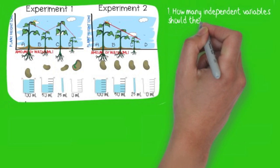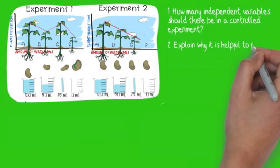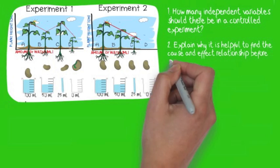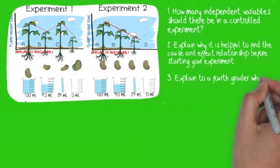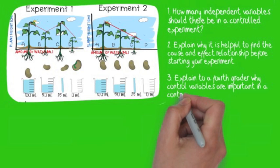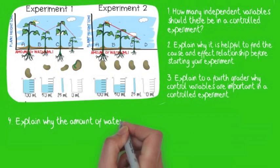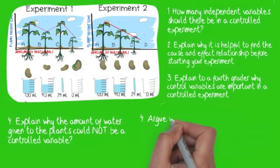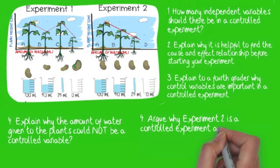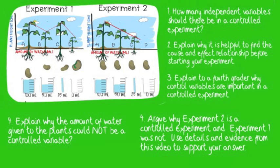Let's review. Number one: How many independent variables should there be in a controlled experiment? Number two: Explain why it is helpful to find the cause-and-effect relationship before starting your experiment. Number three: Explain to a fourth grader why control variables are important in a controlled experiment. Number four: Explain why the amount of water given to the plants could not be a controlled variable. Number five: Argue why experiment two is a controlled experiment and experiment one was not — use details and evidence from this video to support your answer.